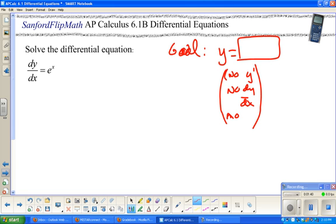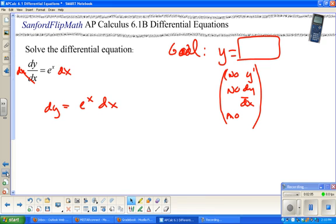Now, initially what we need to do is separate variables, and this will become more important later, but we're going to establish the habit now. Basically anything about x is going to stay on one side, anything about y is going to stay on the other side of the equal sign. So, I'm going to multiply both sides by dx. This becomes dy equals e to the x dx.